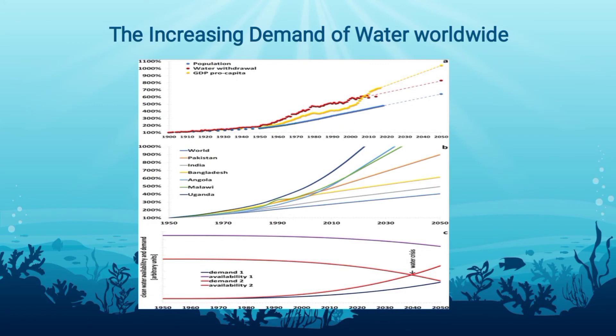This graph shows the increasing demand of water worldwide. Increasing water demand follows population growth, economic development, and changing consumption patterns. Global demand has increased by 600% over the past 100 years. Global water demand for all uses, presently about 4,600 cubic kilometers per year, will increase by 20% to 30% by 2050, up to 5,500 to 6,000 cubic kilometers per year.